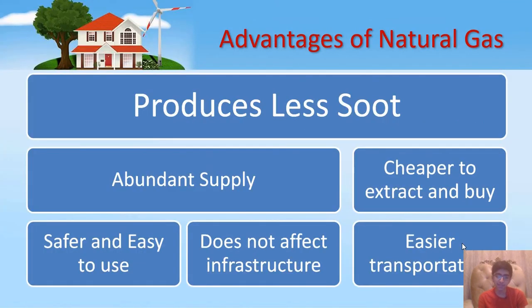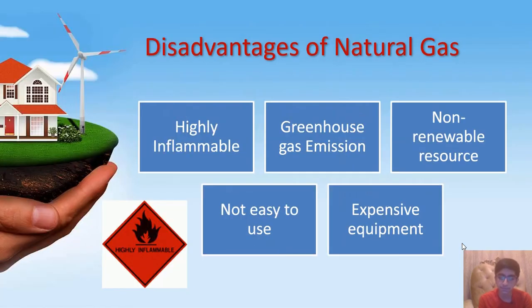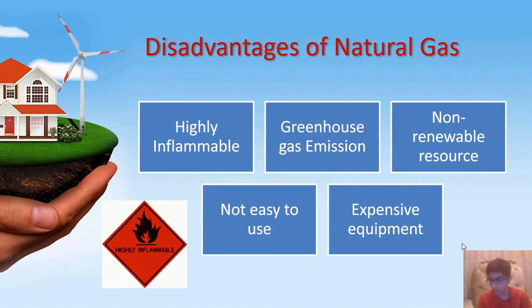The advantages of natural gas are: they produce less soot, they are in abundant supply, it is cheaper to extract and buy, it is safer and easy to use, it does not affect infrastructure, and it is easy to transport. The disadvantages of natural gas are: it is highly inflammable, it produces a lot of greenhouse gas emissions, it is not a renewable energy resource, and the drilling equipment is very expensive.